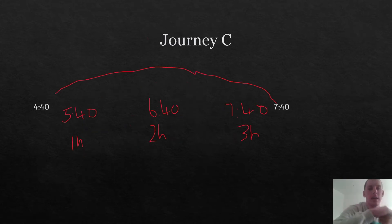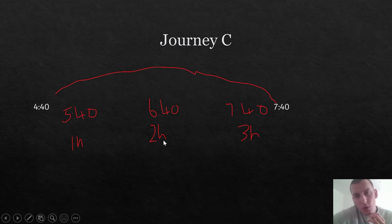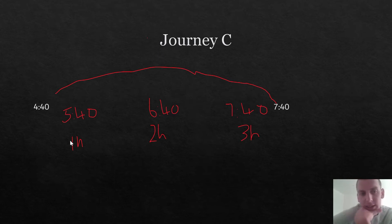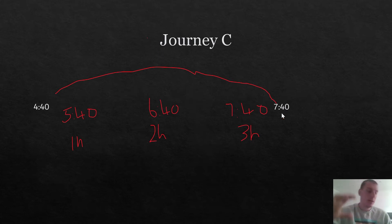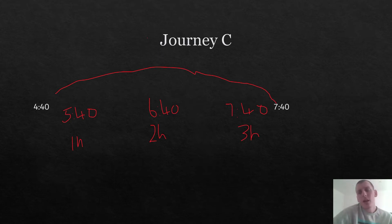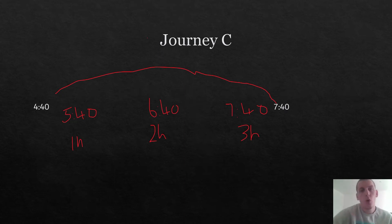The third one is journey C, which starts in London at 4:40 and finishes in Newcastle at 7:40. We need to find the difference between 4:40 and 7:40. So: 4:40 plus one hour is 5:40 — one hour; 5:40 plus one hour is 6:40 — two hours; 6:40 plus one hour is 7:40 — three hours. Our time is 7:40, so that's three hours exactly. If you didn't quite get that right, don't worry — look over this video again, send me an email for extra support, or look online with your parents or guardians.